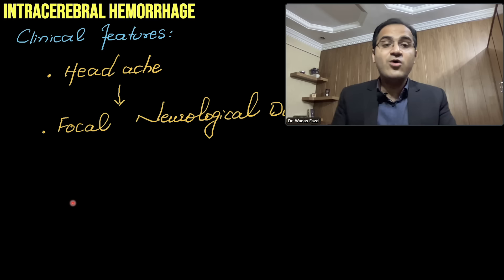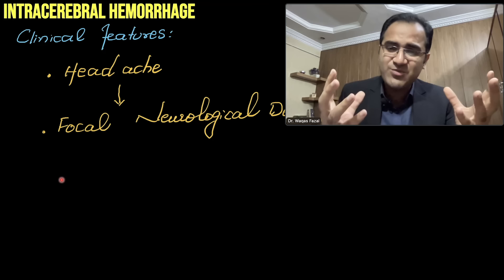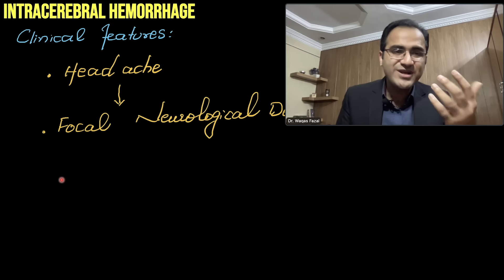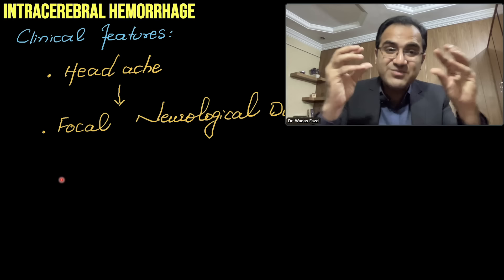The classical clinical presentation of intracerebral hemorrhage is headache accompanied by focal neurological deficit. The headache is due to the intracranial bleed. The focal neurological deficit may include weakness or paralysis on one side of the body, and it depends on the site affected. The most common site affected is the lenticulostriate vessels supplying the basal ganglia, particularly the putamen.